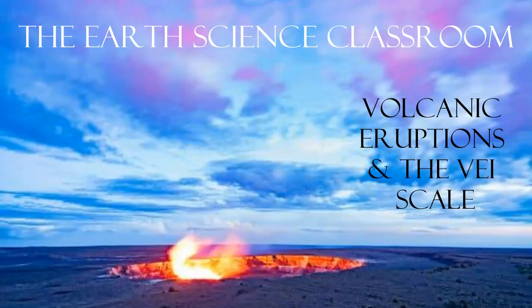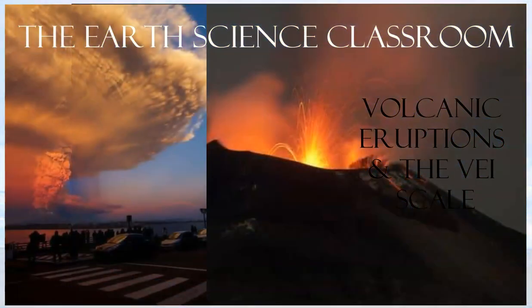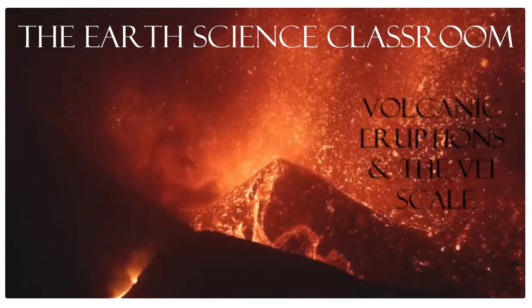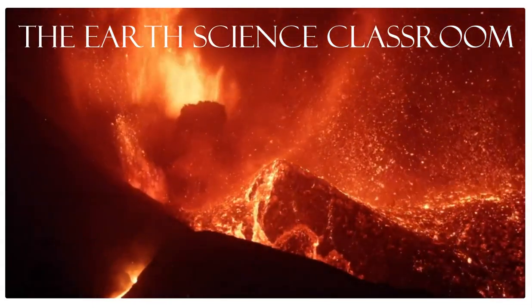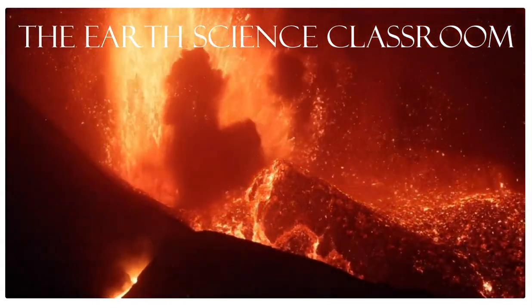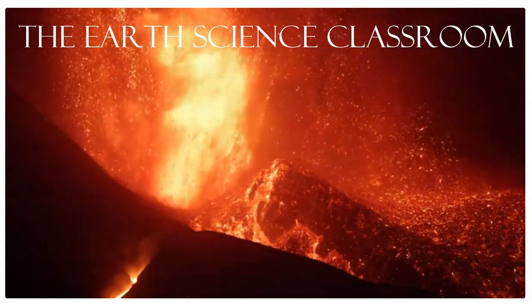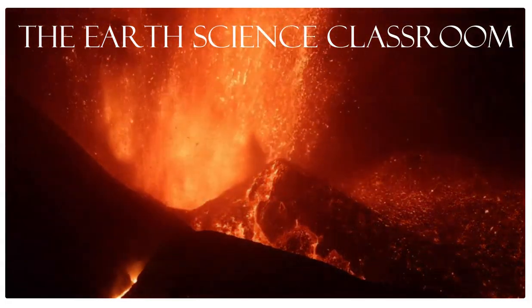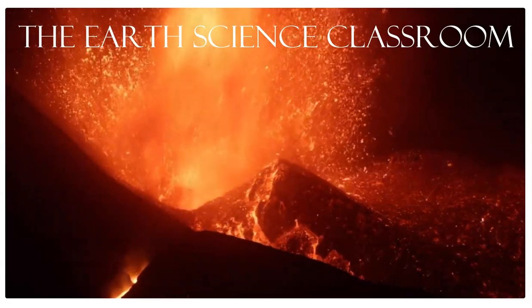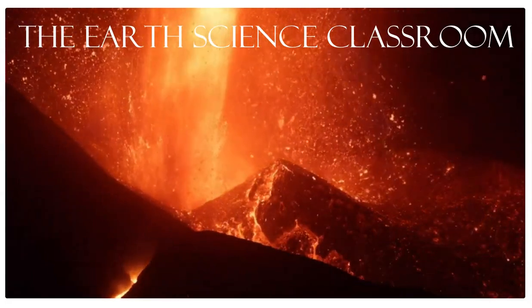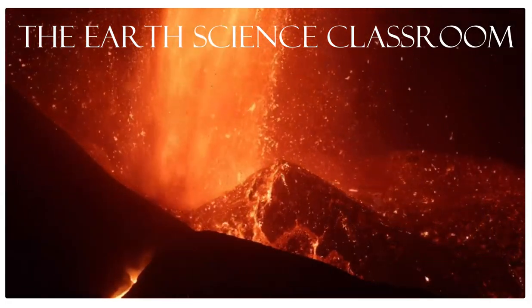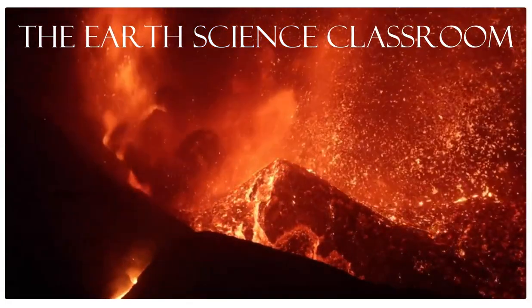It's part of the Volcanology playlist. The VEI scale is a relative scale to assess or identify the different levels of eruptions, the intensity, the volume, and that usually relates closely to the amount of damage and hazards associated with each type of eruption. It links up nicely with our other content like magma and lava characteristics, volcano types, eruption types, and different locations.